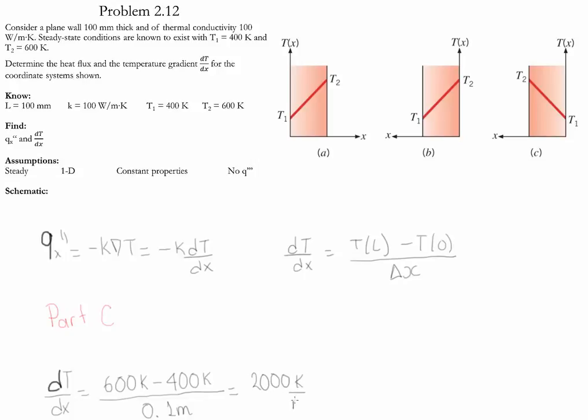If we evaluate the flux value and substitute, it gives us negative 2e5 watts per meter squared.